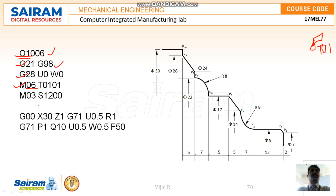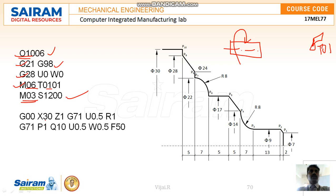The job is held in the chuck and has to rotate for the operation. M03 rotates the spindle at 1200 RPM. Then we bring the tool to a starting position using G00 X30 Z1 — since the job diameter is 30, we bring the tool near the job without touching it, positioning it at Z1.